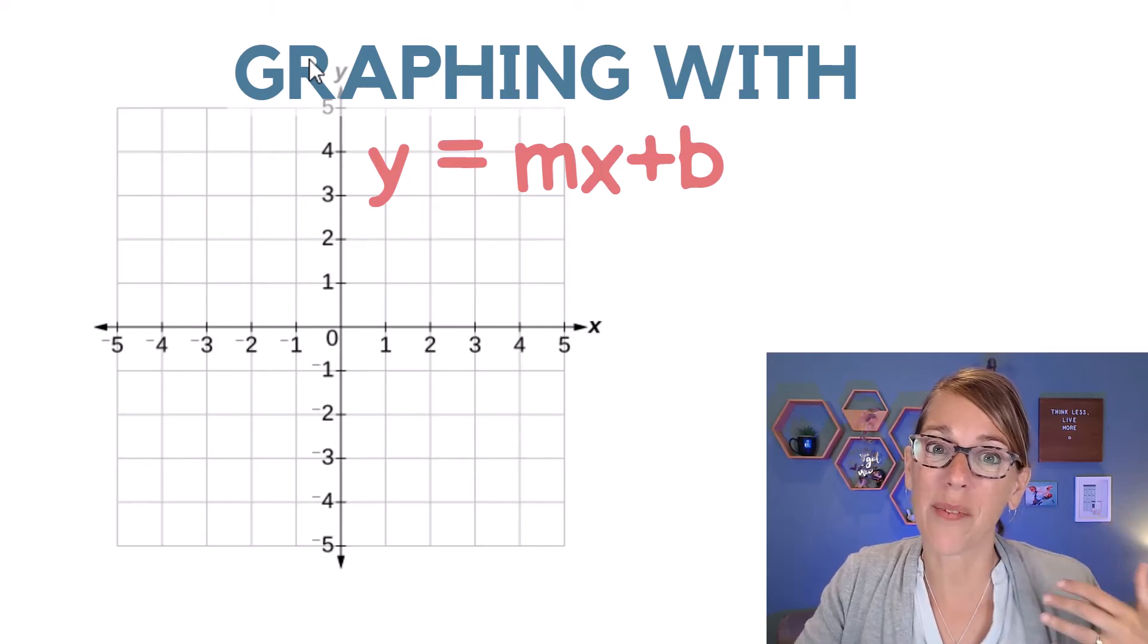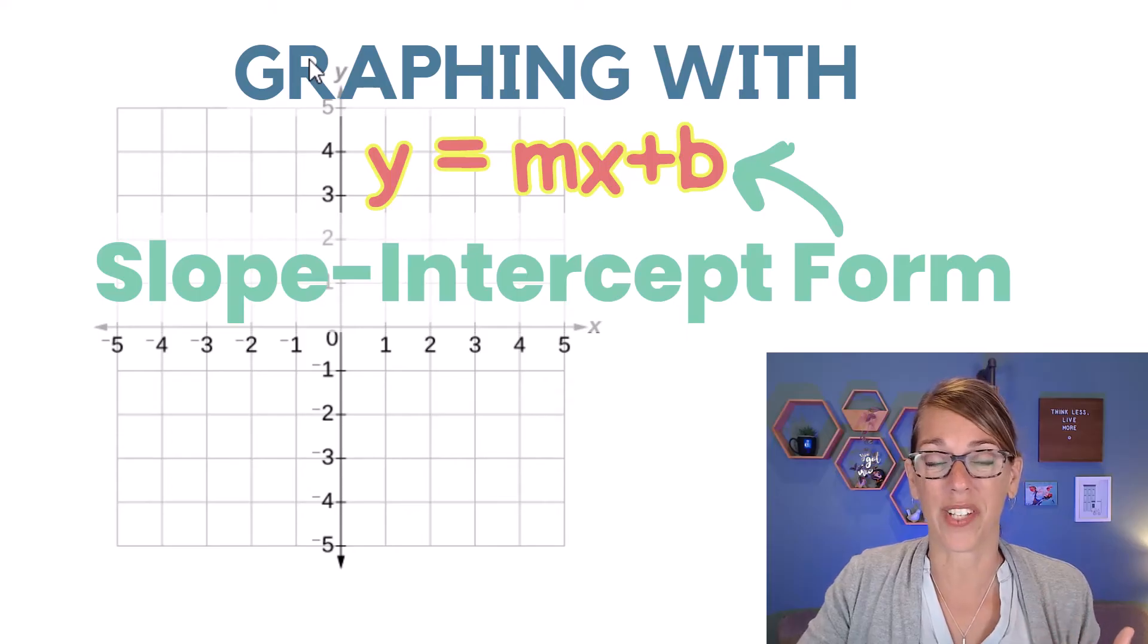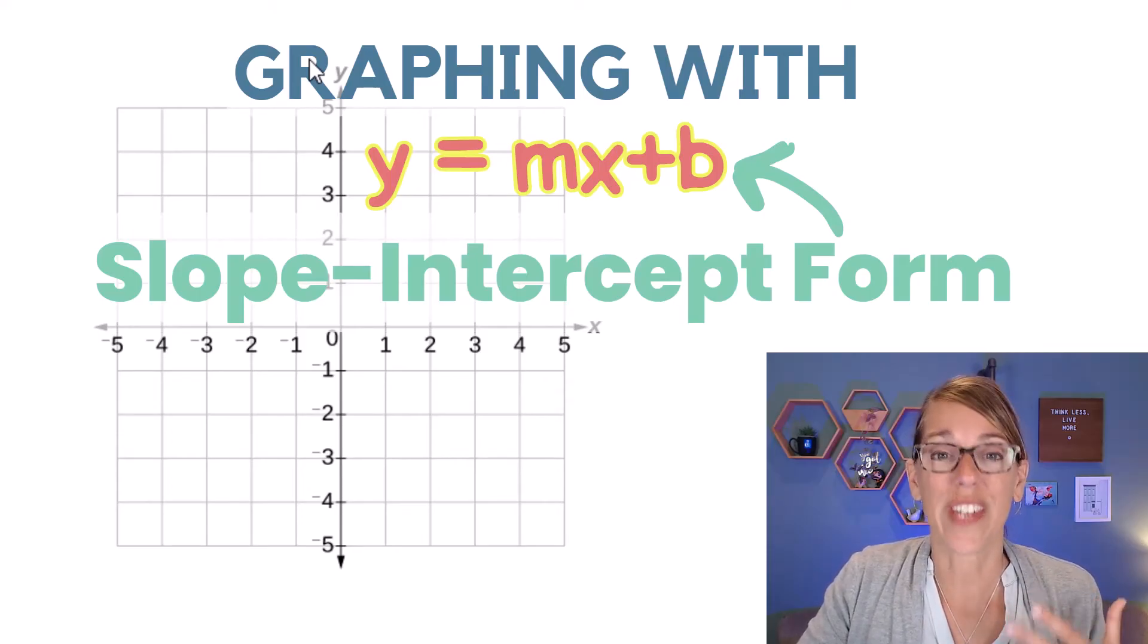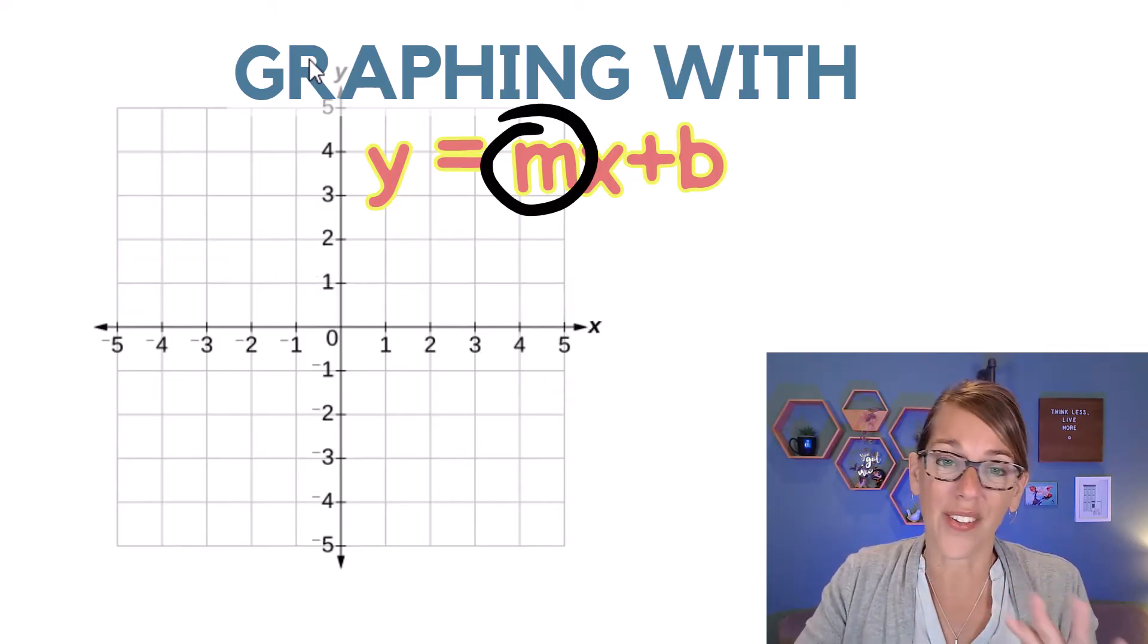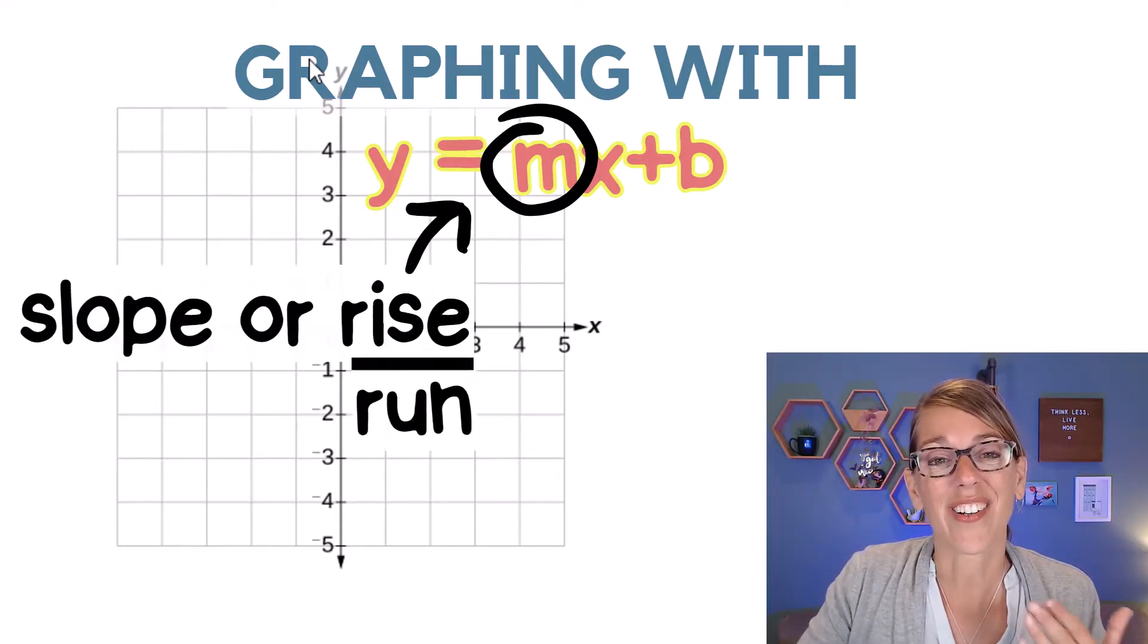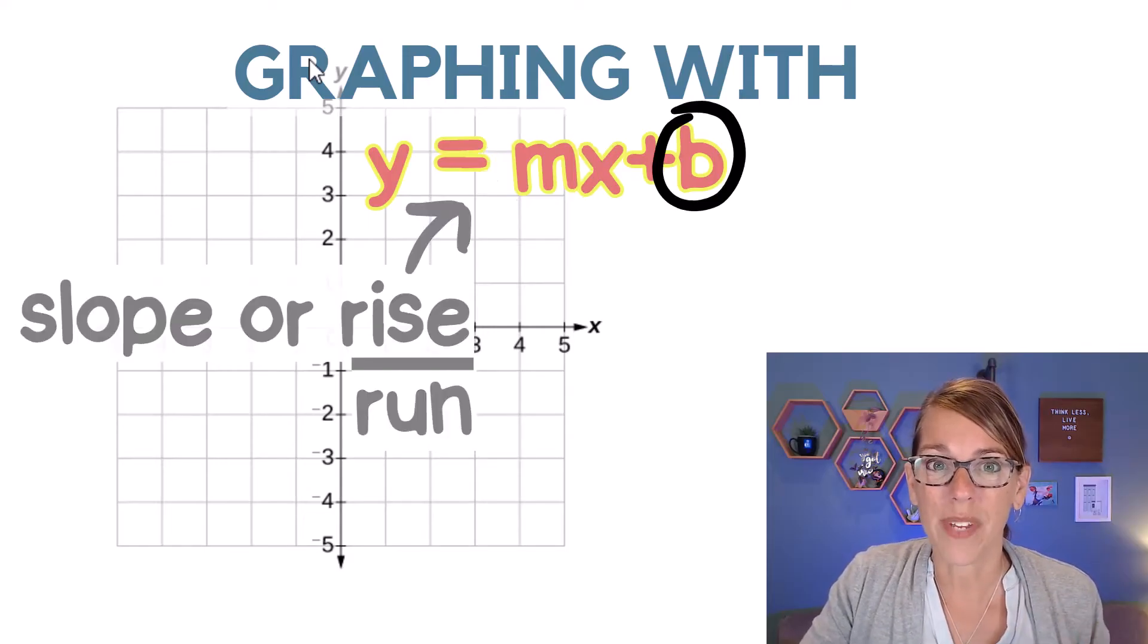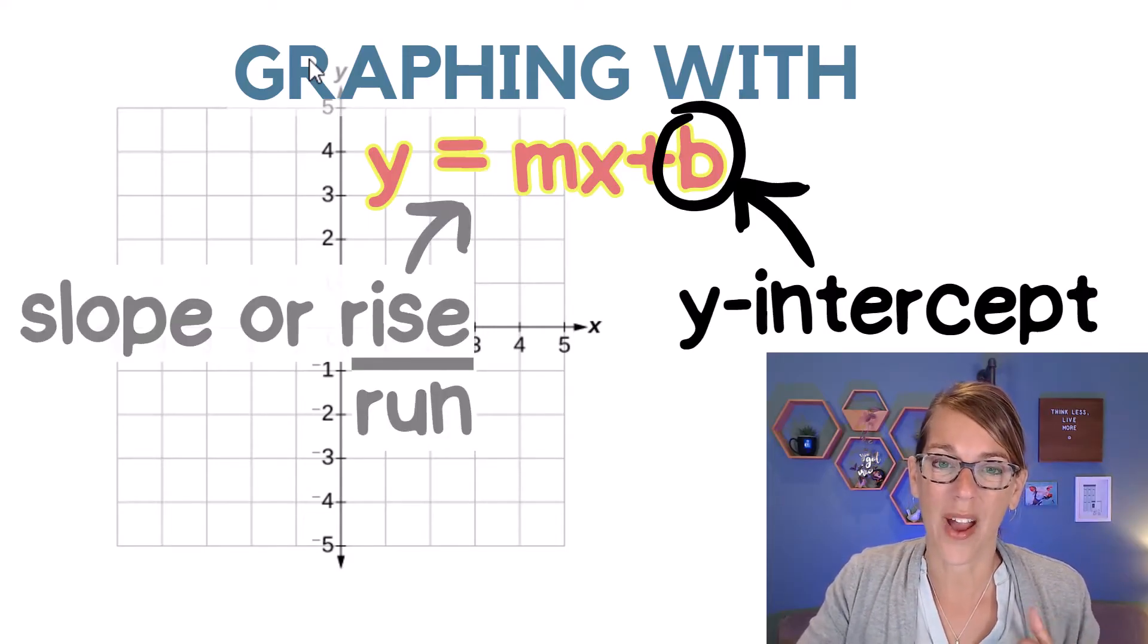Hi everybody, I'm Angie. We're going to be graphing today with y equals mx plus b, which is our slope-intercept form. This is so nice to graph with because we've got all the information we need starting with m, the number multiplied by the x. This is our slope or our rise over run, and then that number b on the end is our y intercept.